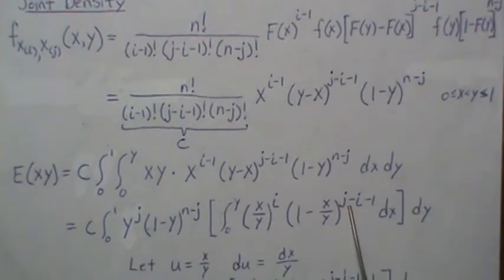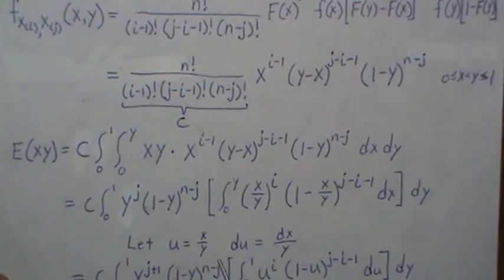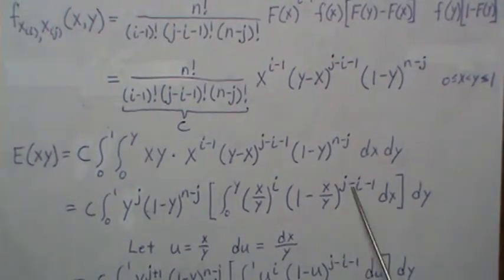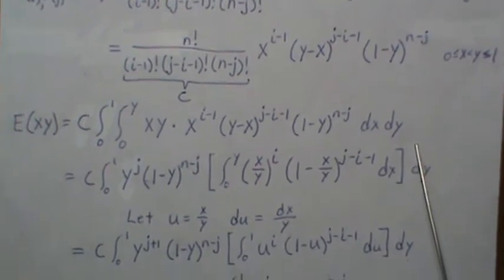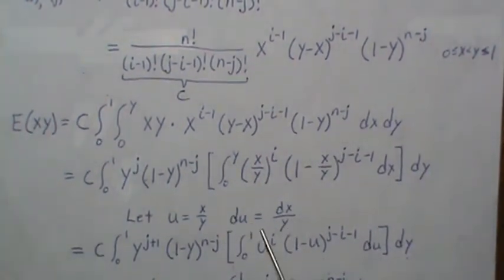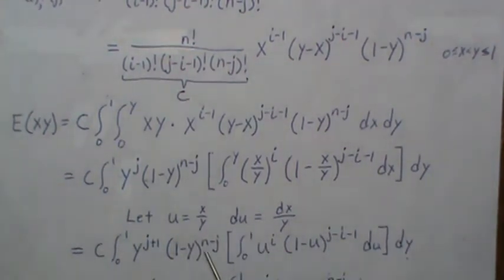Now this here will do a transformation, let U equal X over Y, so the derivative is dU is equal to dX over Y. We plug that back in. Notice this Y when it comes, if we multiply it over here, so dX is equal to Y dU, so that's why we have an extra Y here.